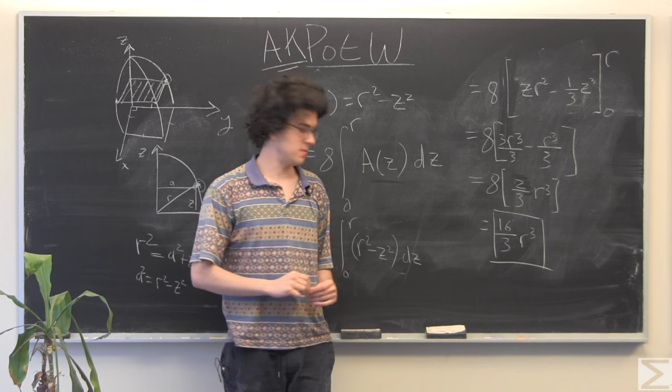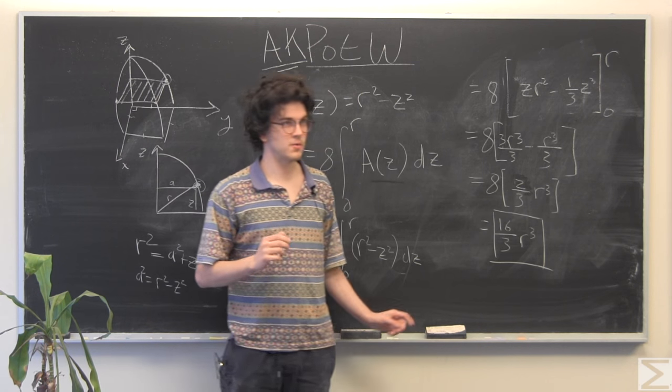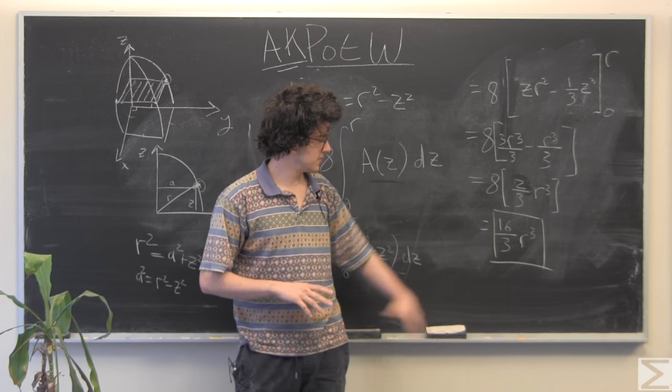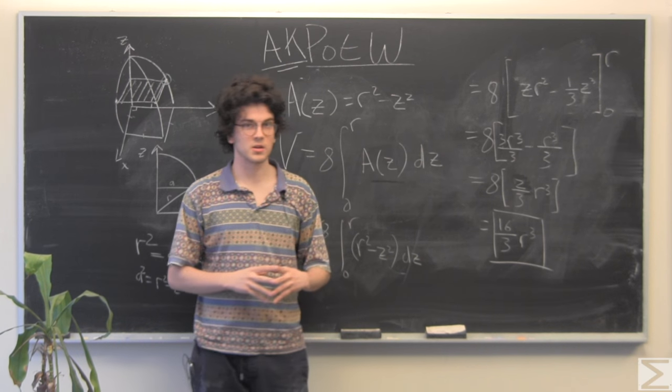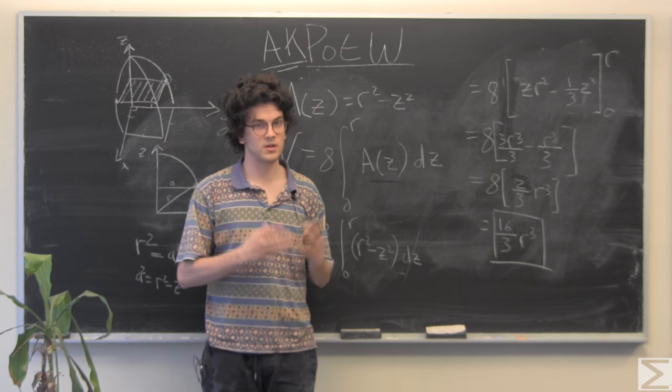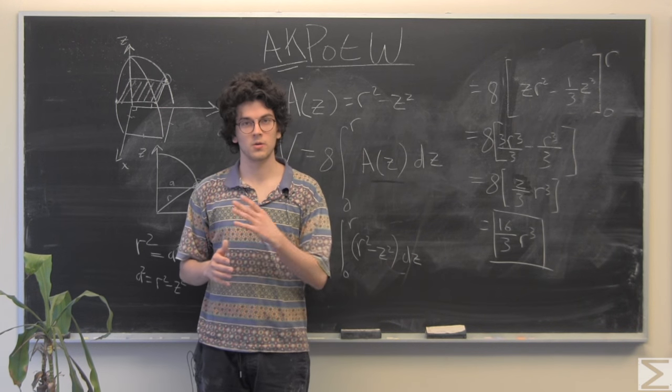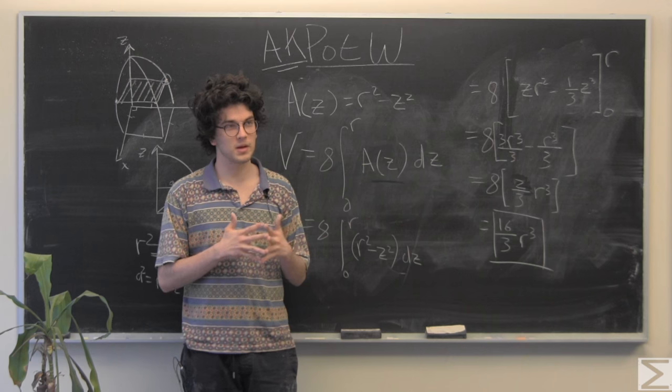So the volume of two cylinders intersecting at a right angle through their axes is 16 over 3, 16 thirds r cubed. Depending on what your radius is, the volume is going to grow in a cubic manner.